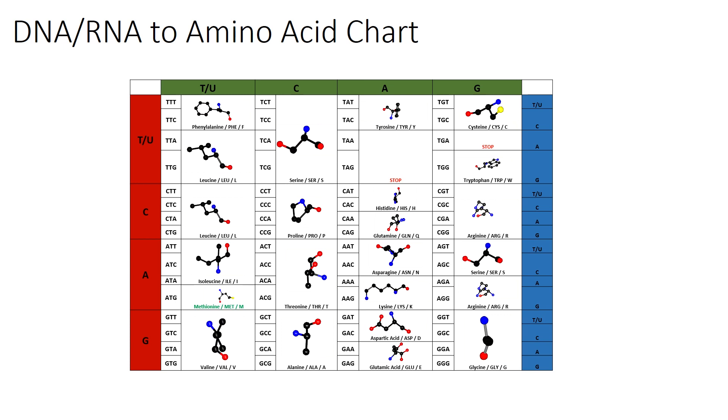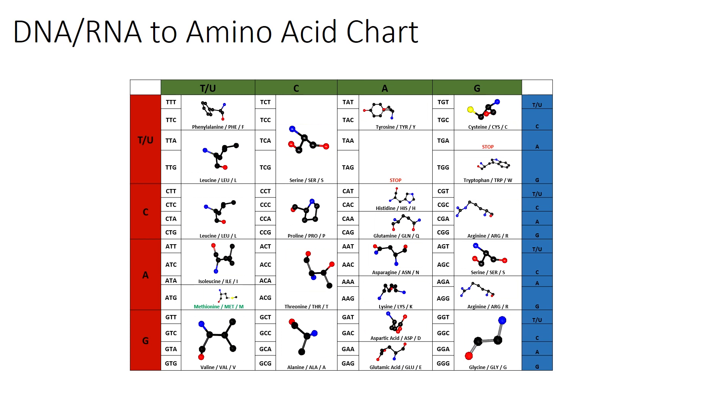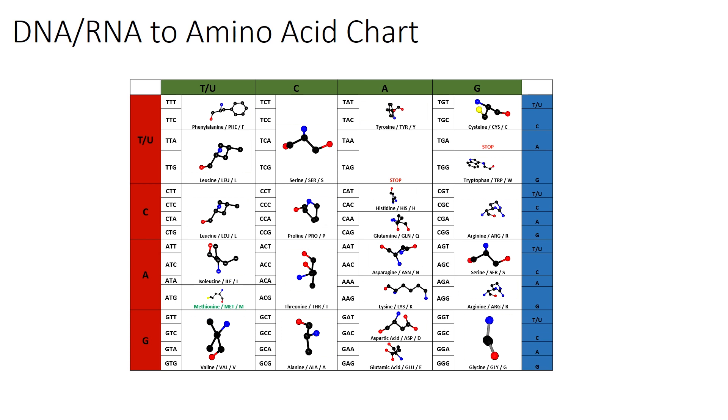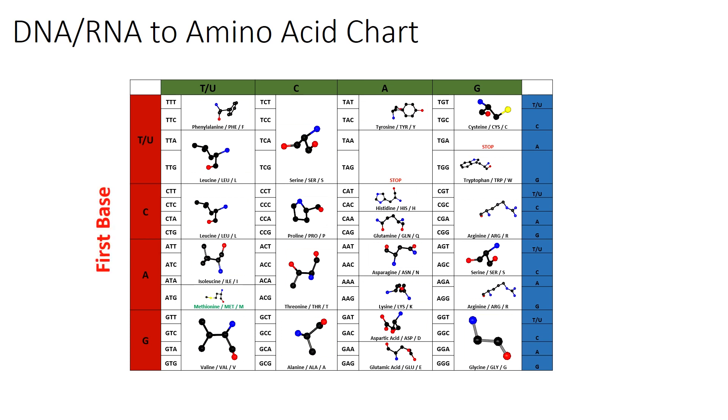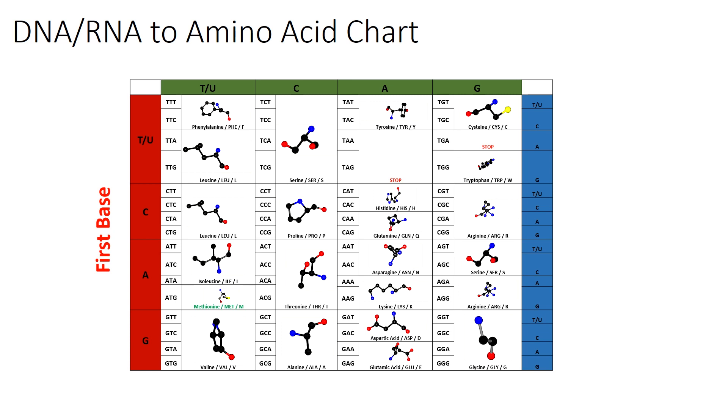While it might seem complicated to follow at first, it is simple once you get to grips with how it works. To convert from a DNA or RNA codon to an amino acid, you first select the row on the left, highlighted in red, which corresponds to the first base in the codon.